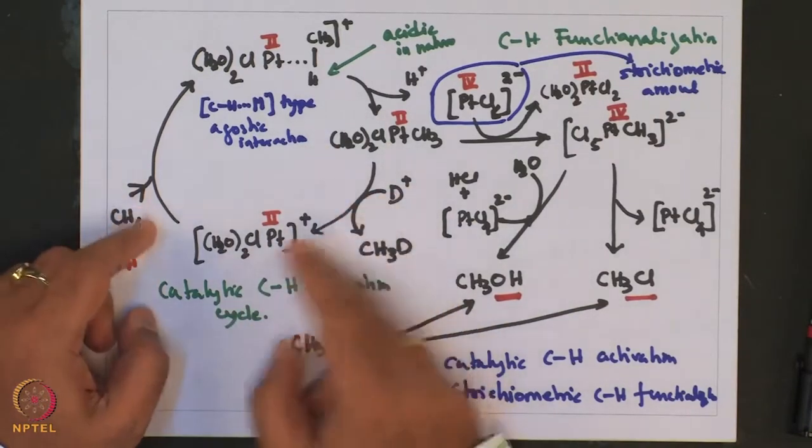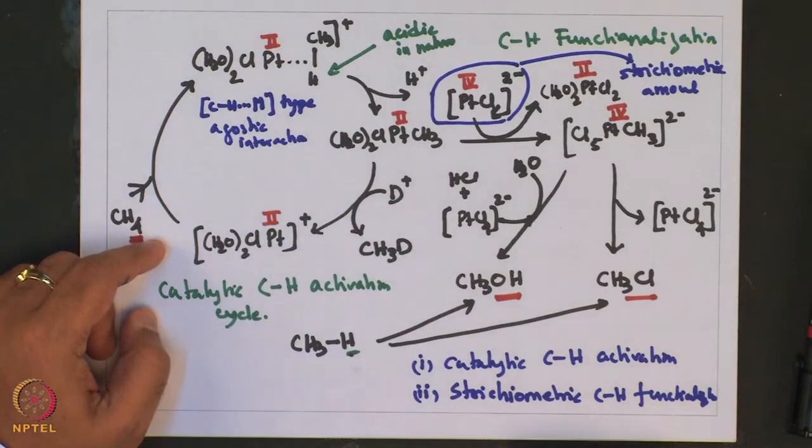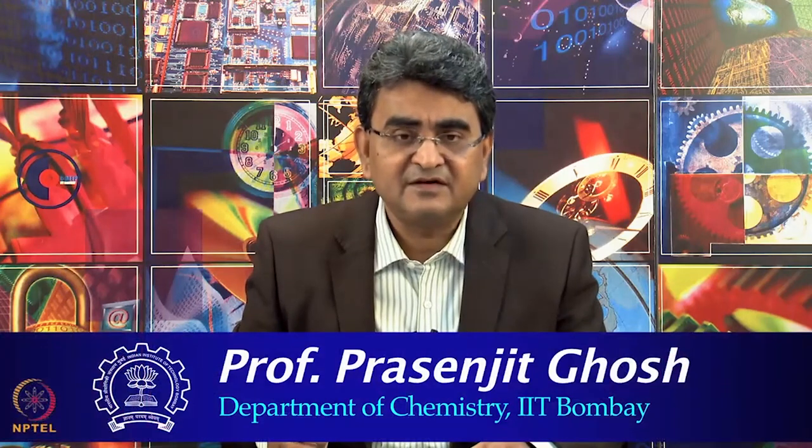CH activation was achieved with platinum(II) complexes, and CH functionalization was achieved from platinum(IV) complexes. That shows the utility of this method and the versatility of platinum as a metal — in two different oxidation states, it can perform two interesting reactions. In the next lecture, we are going to take up more examples of these intermolecular CH activations that followed after Shilov's work, which will be very useful in understanding the chemistry of this kind of complexes.